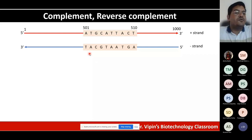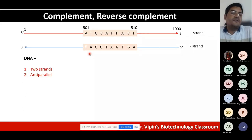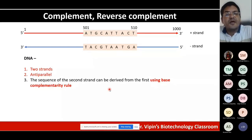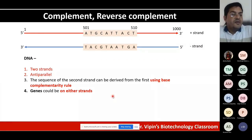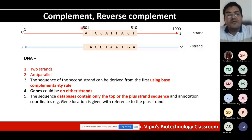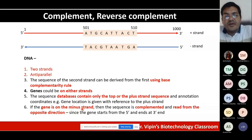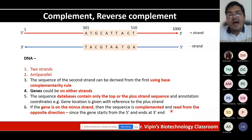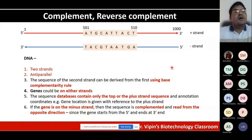The two DNA strands run anti-parallel and the sequence of the second strand can be derived from the first using base complementarity (A with T, G with C). Genes can be on either strand. Sequence databases contain only the top (plus) strand, with annotation coordinates given relative to the plus strand. If a gene is on the minus strand, the sequence is complemented and read from the opposite direction — that is the reverse complement operation.